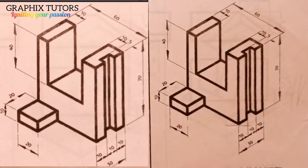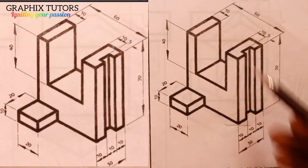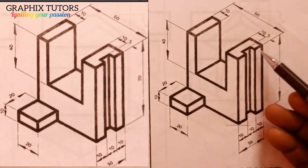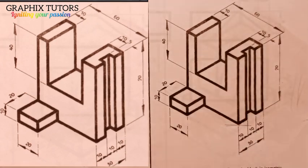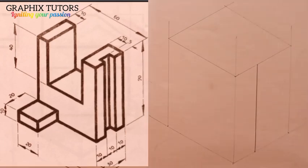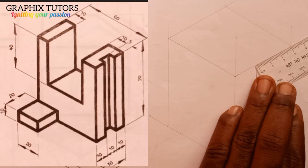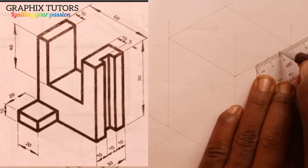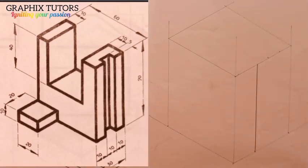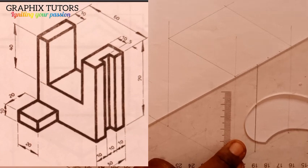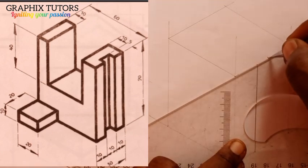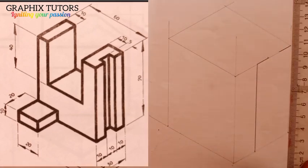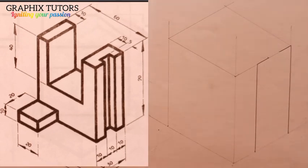Now I will measure inward — which is 10. From the ending I'll measure it inward, which is 10. So from here and here I'll measure 10 inward. From 0 to 1 is 10, and from 3 to 2 is another 10. I'll then thicken those points using my set square.